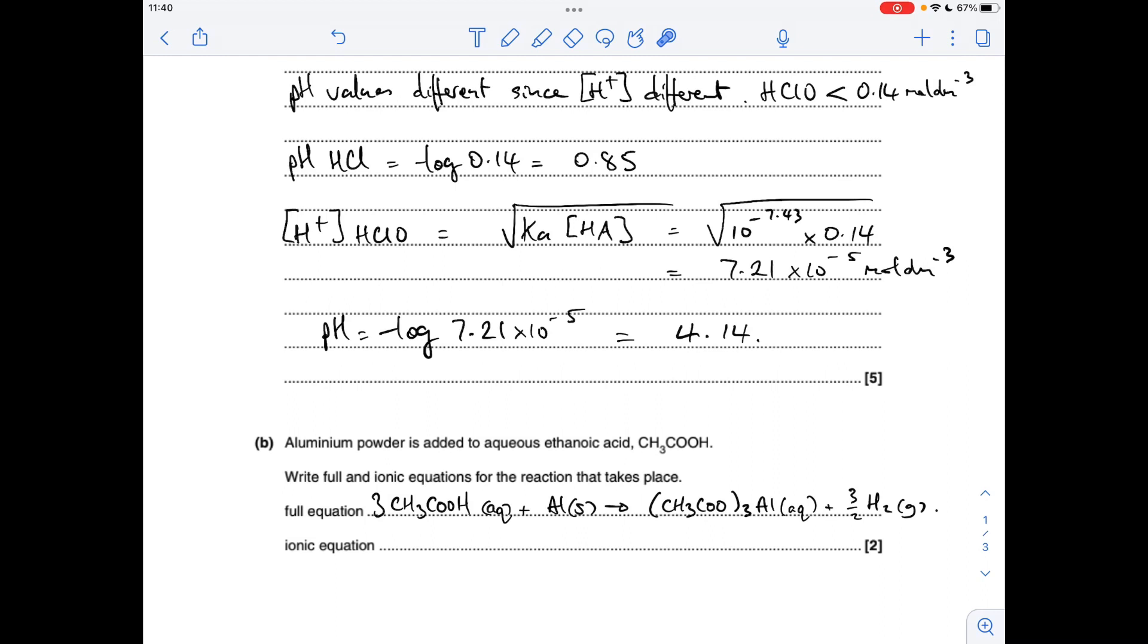Ionic equation now, so if we talk about what's going to cancel, so you've got 3 aqueous ethanoic ions left and right, so they'll cancel. 3 H plus ions don't cancel. Obviously aluminium solids go into aluminium 3 plus aqueous, so they're not going to cancel. So your 3 over 2 H2 gas needs to stay in as well.